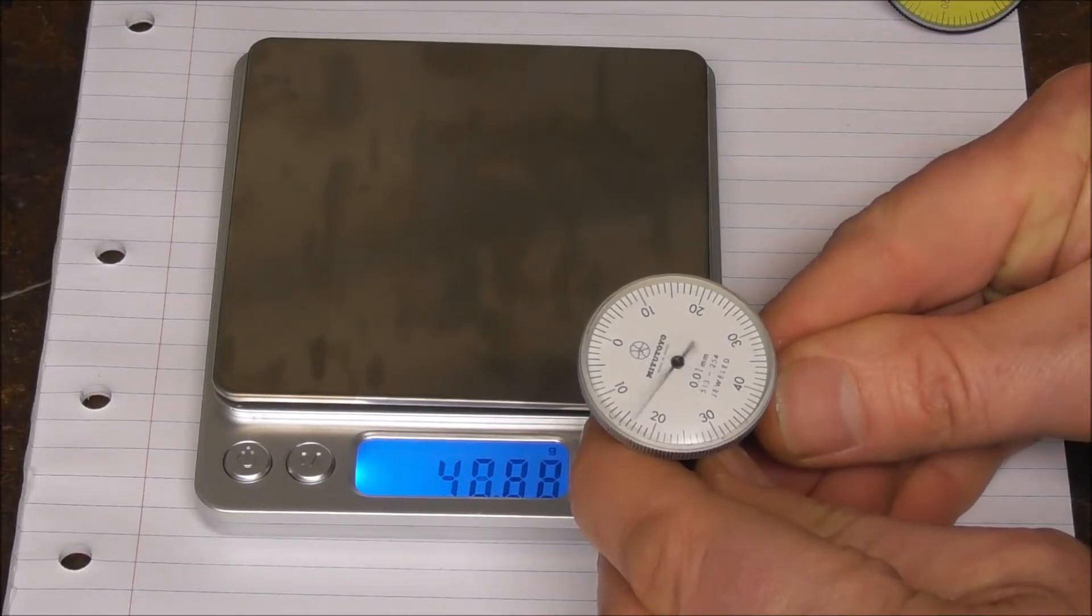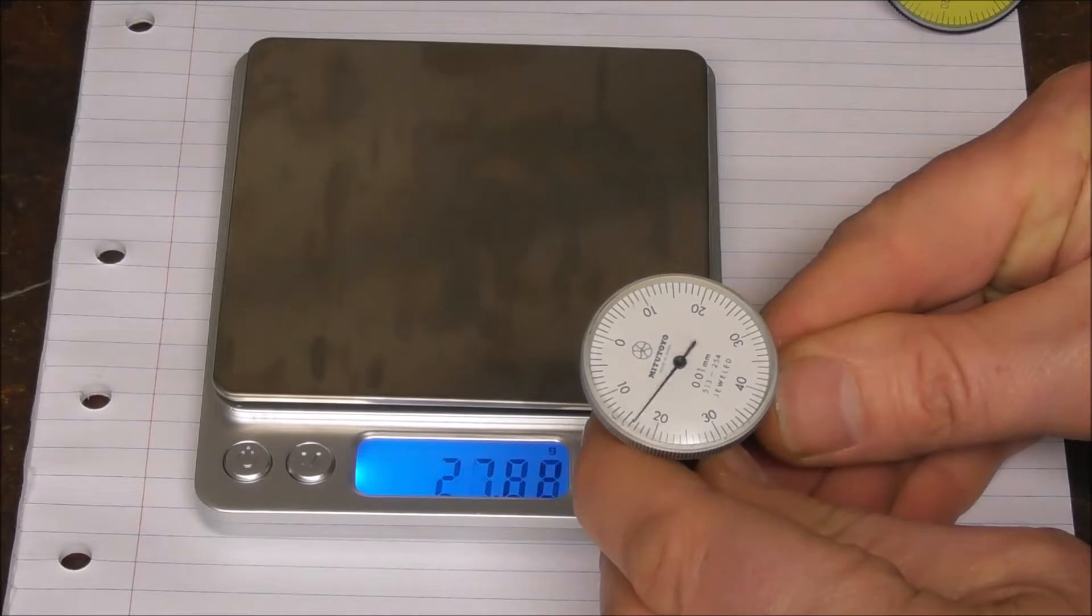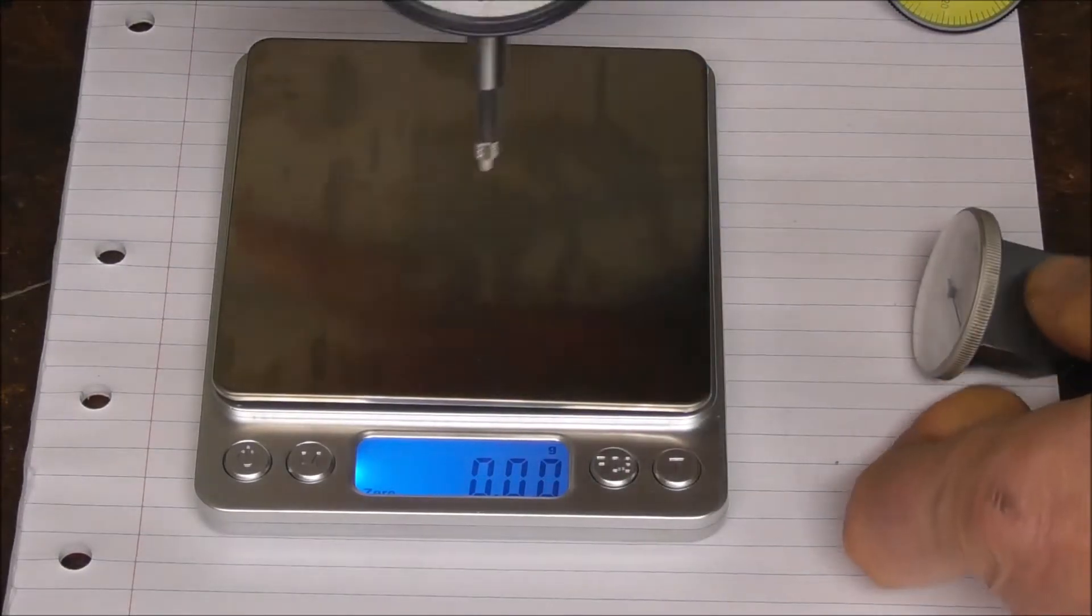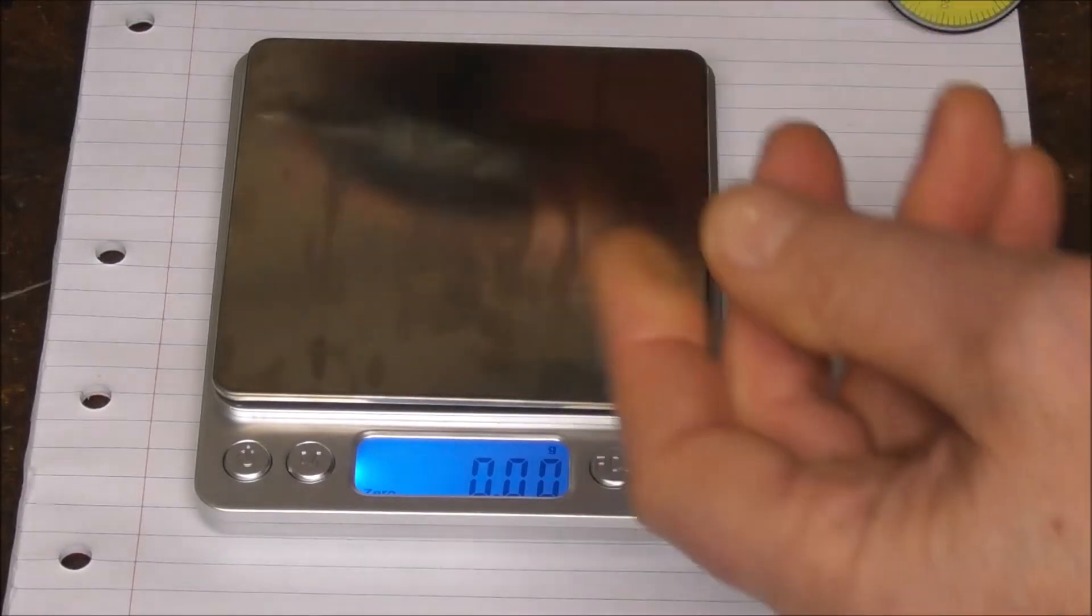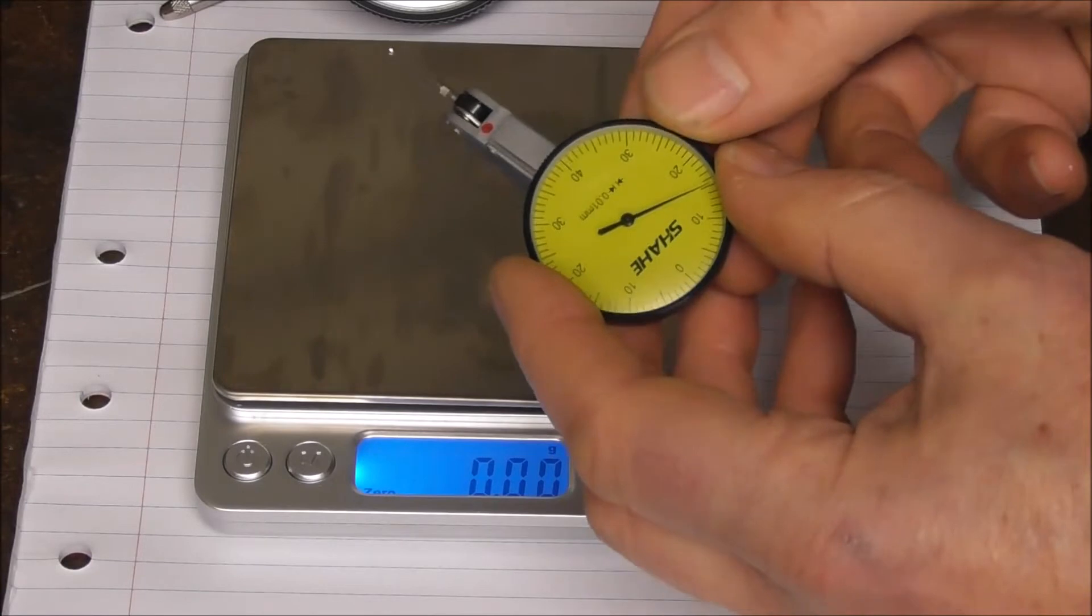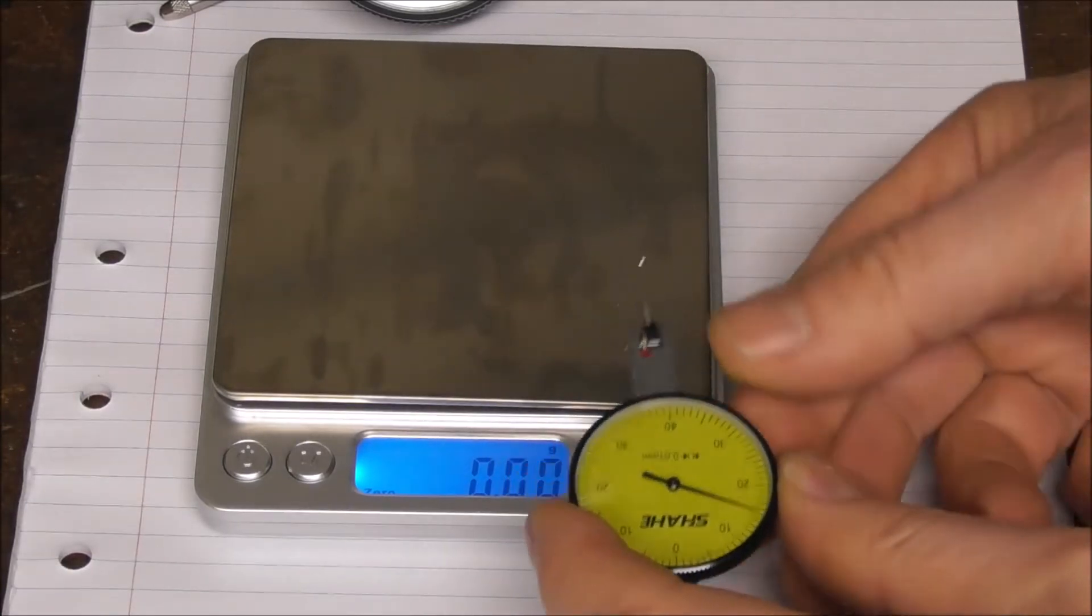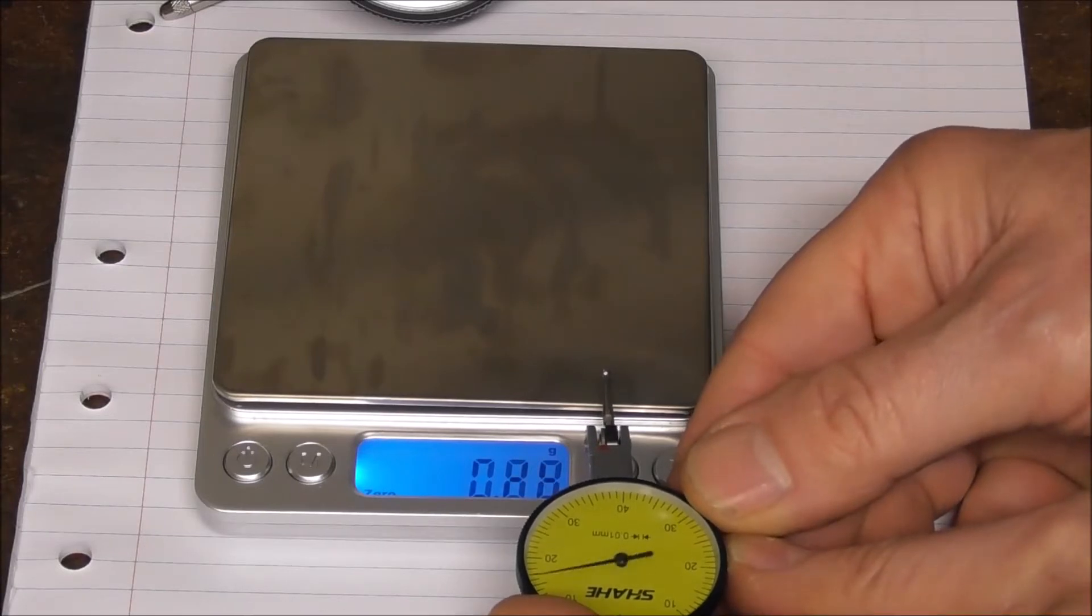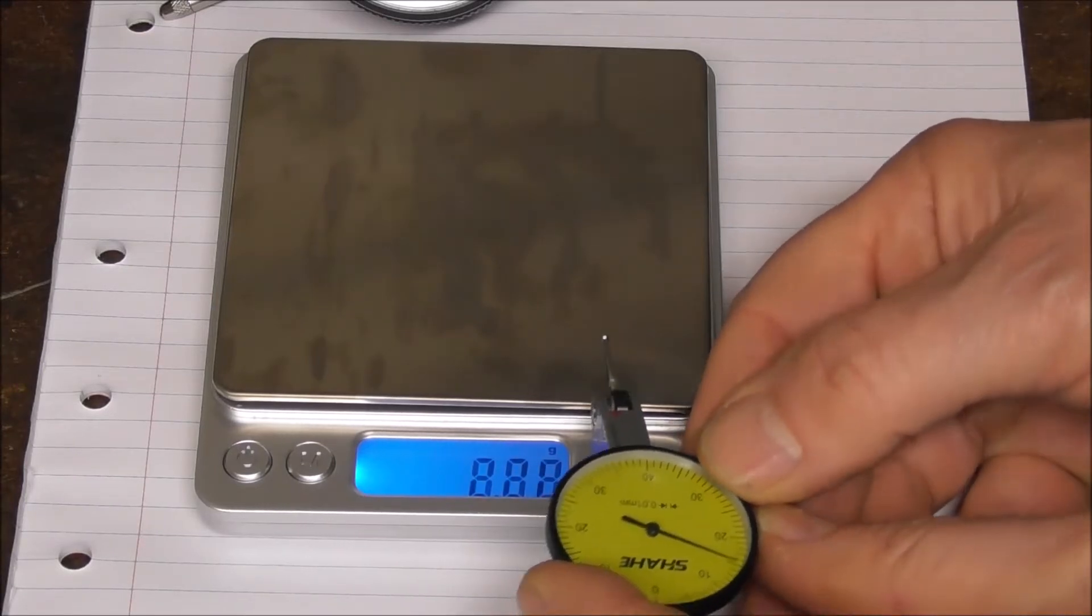The Mitutoyo varies from the start to the end but 20 to 40 grams in that sort of range. Still a lot less than a plunger indicator of around 100 grams. To be fair, that's a point in favor of the Chinese Shahi indicator. It is very sensitive and has very low stylus spring pressure.